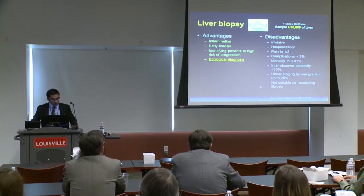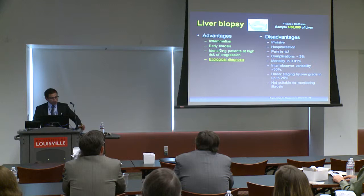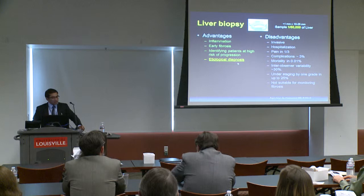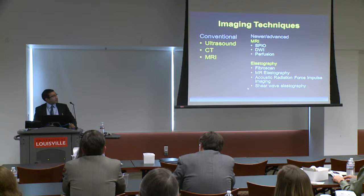Liver biopsy has disadvantages — nobody wants to go through this procedure mostly because of pain. But it has advantages: it gives information about inflammation and is a very sensitive technique to detect early fibrosis. Most importantly, it can make an etiological diagnosis of what's causing the chronic liver disease. Serological markers are not reliable — moderately sensitive and specific, but combinations have been found useful in advanced fibrosis and cirrhosis. So naturally, imaging techniques were put to the forefront to develop a non-invasive technique to detect fibrosis.